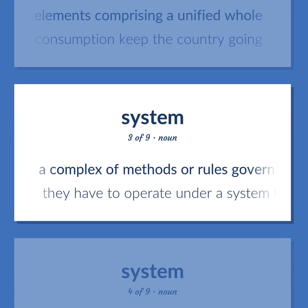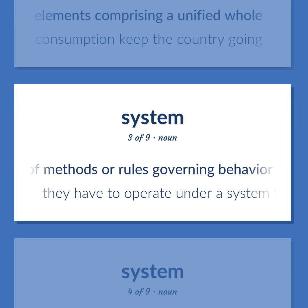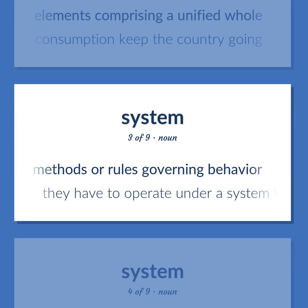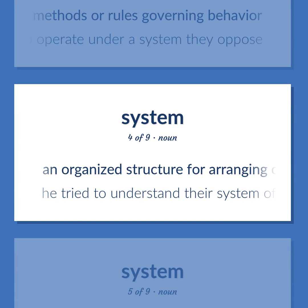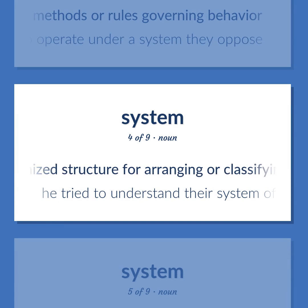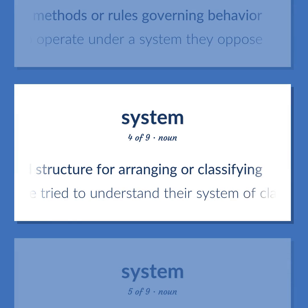System: A complex of methods or rules governing behavior. They have to operate under a system they oppose. An organized structure for arranging or classifying. He tried to understand their system of classification.